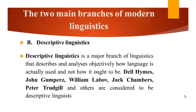The second branch of modern linguistics is descriptive linguistics. Descriptive linguistics is also a major branch of linguistics that describes and analyzes objectively how language is used, based on actual language use and not prescriptive rules. Dell Hymes, John Gumperz, William Labov, Jack Chambers, Peter Trudgill, and others are considered to be descriptive linguists.